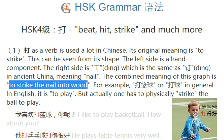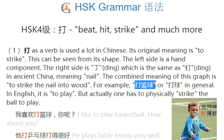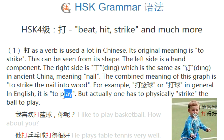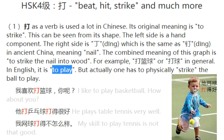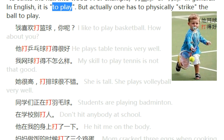For example, we can say 打篮球 — you play basketball — or 打球 — play ball. You hit the ball and the ball bounces back. In English you say 'play the ball,' but we understand you have to physically strike the ball to play. 我喜欢打篮球，你呢? I like to play basketball. How about you?